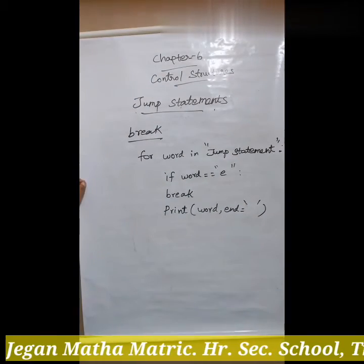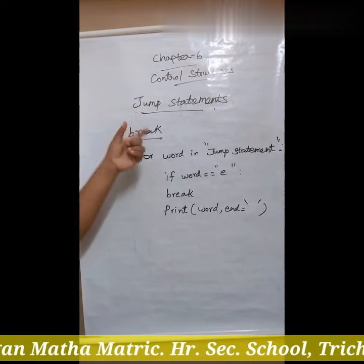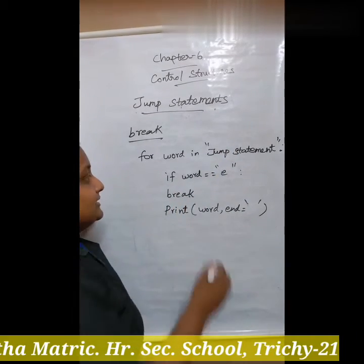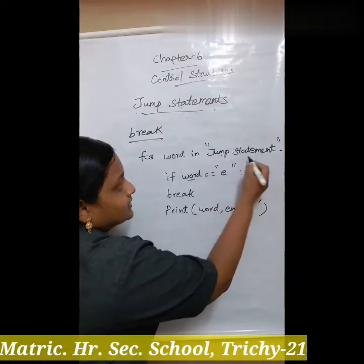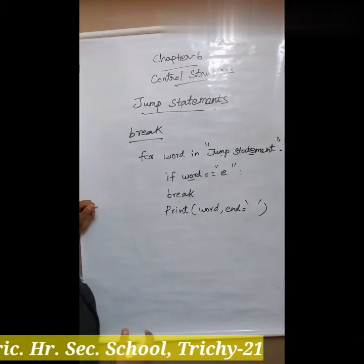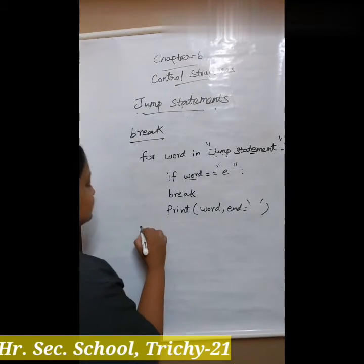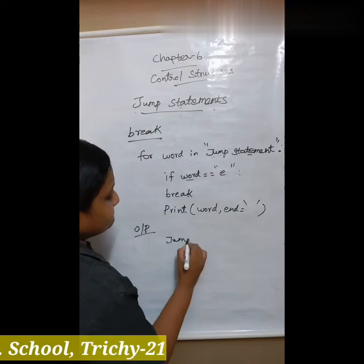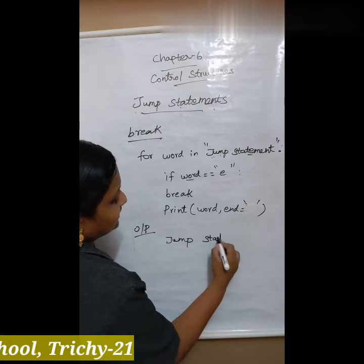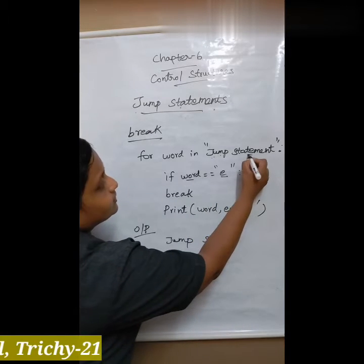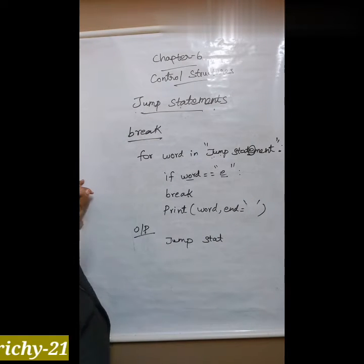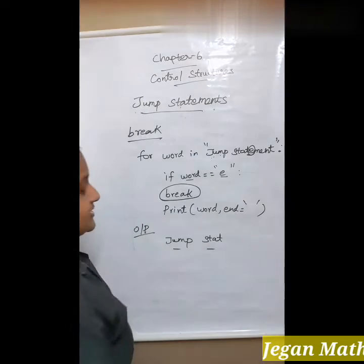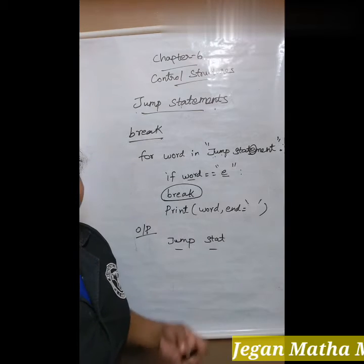Here is the example for break statement. For each word in 'JUMP STATEMENT', if word equals 'e', it breaks — otherwise it prints the word. It checks character by character: J, U, M, P, S, T, A, T — once the 'e' is reached, it breaks the loop. So the output of the program is 'JUMP STAT'. This is the example for break statement.